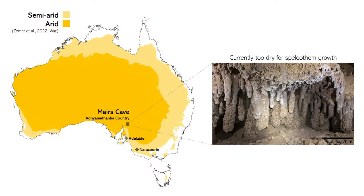This is our study site, Mare's Cave on Adnyamathanha country, situated on the boundary between the arid zone and the semi-arid zone. It contains these really interesting formations. Today it's way too dry for any of the formations to be growing, but the fact that they're present in the cave tells us that at some point in the past, the region was receiving a lot more groundwater infiltration than it is today.